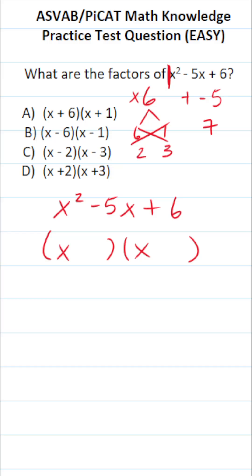What about 2 and 3? 2 times 3 is, in fact, 6. 2 plus 3 is 5, not negative 5. So these won't work.